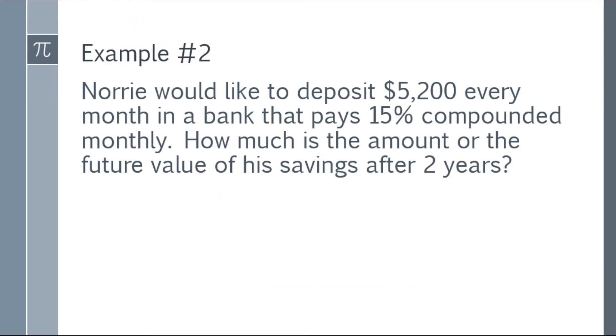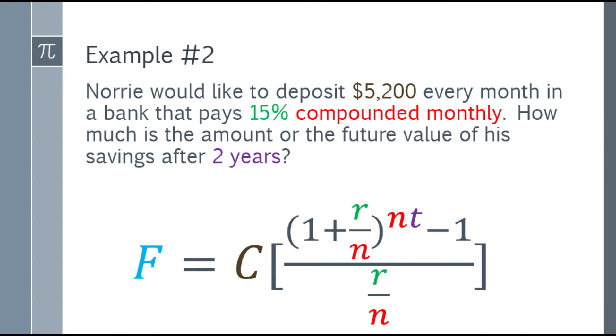Alright, example number 2. Nori would like to deposit $5,200 every month in a bank that pays 15% compounded monthly. How much is the amount or the future value of his savings after 2 years? Let's check - every month payment with monthly compounding, so that's an ordinary annuity. Write the formula and substitute the values.